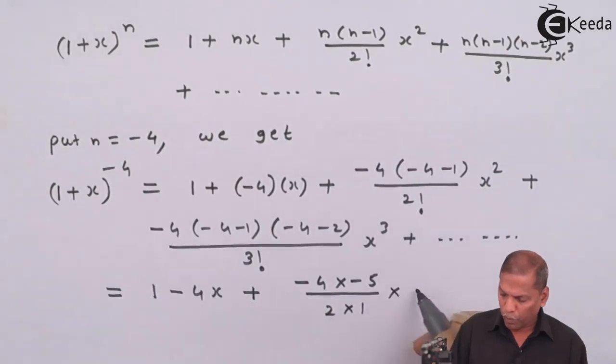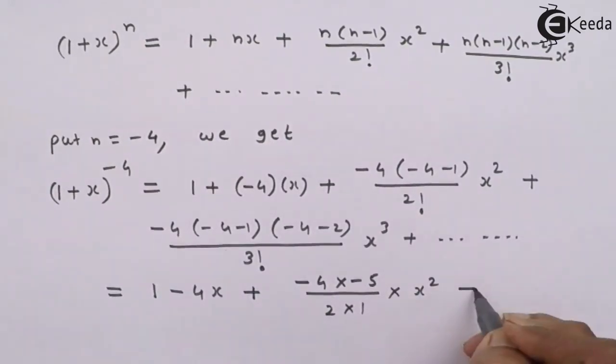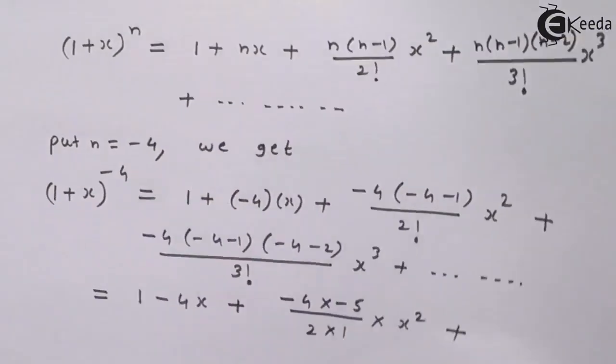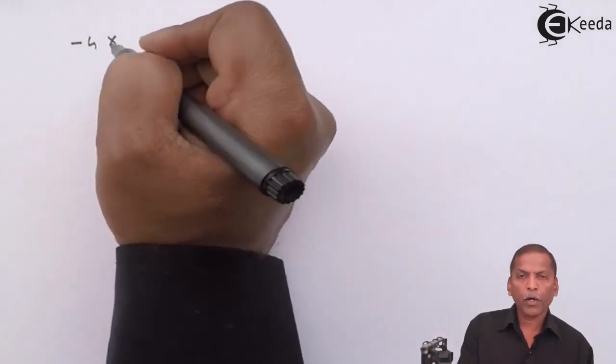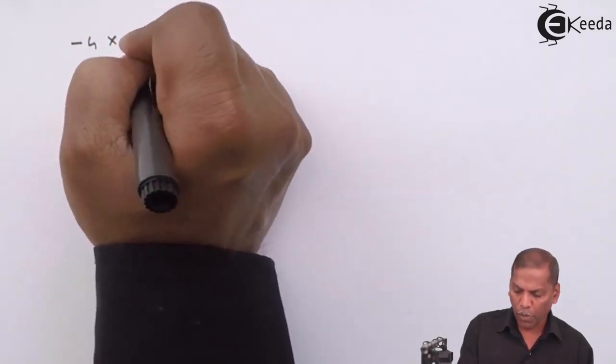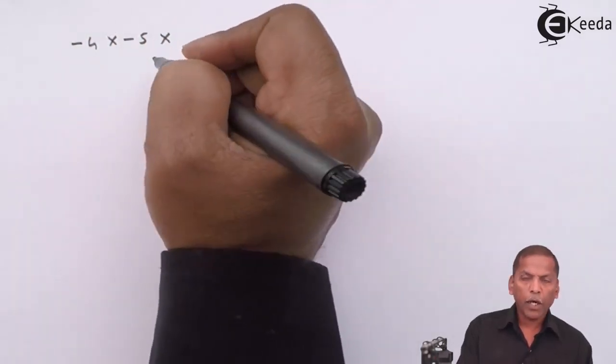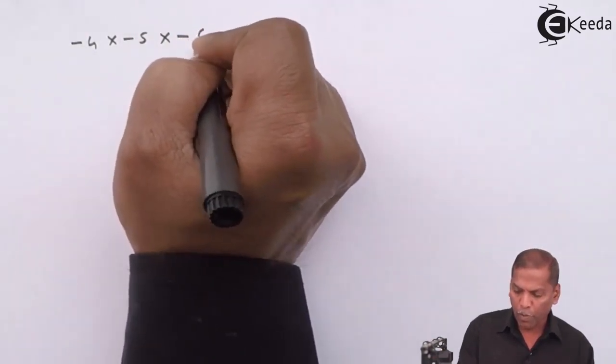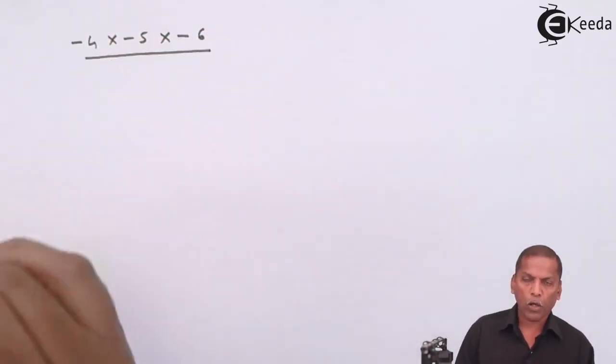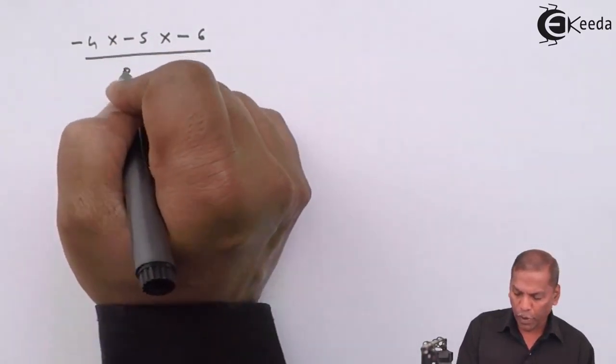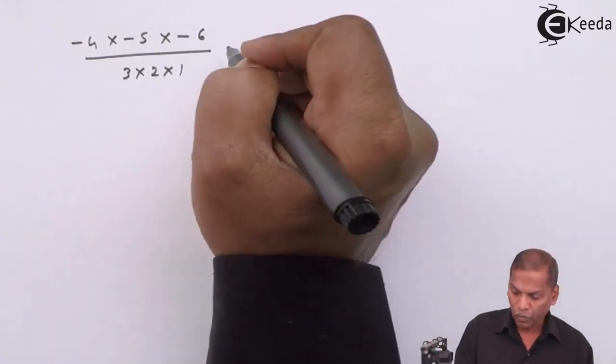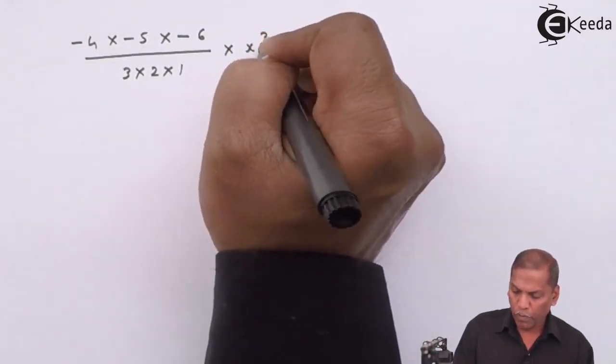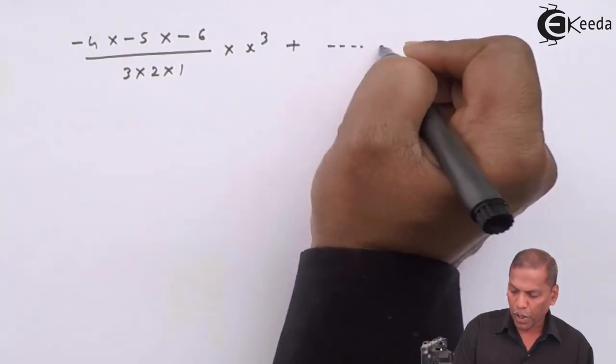plus we write minus 4 as it is, times minus 4 minus 1 that gives minus 5, times minus 4 minus 2 that gives minus 6 upon 3 factorial, which means 3 times 2 times 1, times x cube plus continuing on.